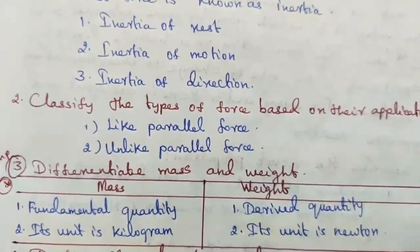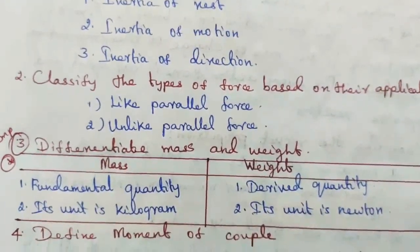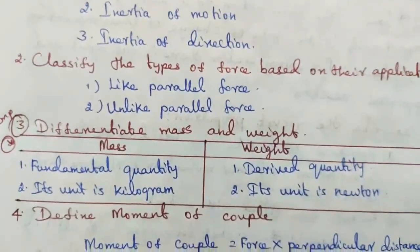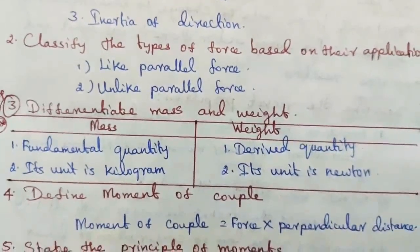Mass — its unit is kilogram. Weight — its unit is Newton. Question number four: define moment of couple. Moment of couple is equal to force into perpendicular distance.